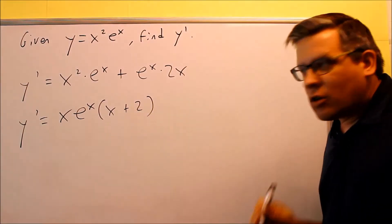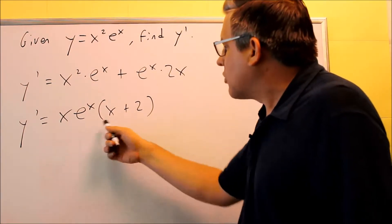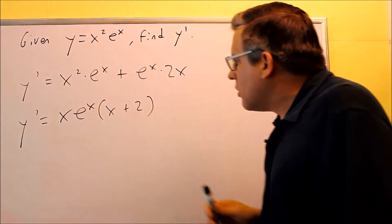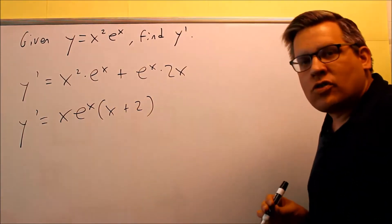Again, you can always tell if you factored it correctly if you multiply this back through. So if I multiply this back through, I get the x squared e to the x, and I get 2x e to the x. And so this right here would be as far as you can go.